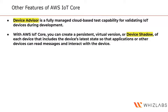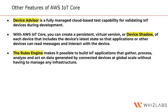Device Shadow is a core feature of AWS IoT Core that lets you create a persistent virtual version of each device, storing its state so applications or other devices can read messages and interact with it accordingly. When internet is unavailable, the device's information is stored in the device shadow and relayed to applications or other devices. When connectivity is restored, devices come back online and can be updated to the desired state, such as switching on the AC to 22 degrees Celsius.